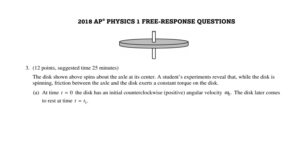For part A, at time t equals 0, the disc has an initial counterclockwise positive angular velocity omega naught. Under the influence of this constant frictional torque between the disc and the axle, the disc later comes to rest at a time t1. So at some time later, when t equals t1, the angular speed will be 0.